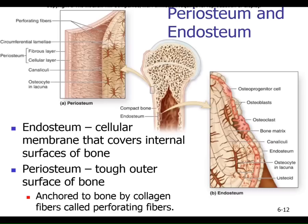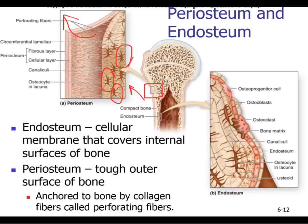Zooming in on the humerus, we see the outer periosteum being peeled back. Inside the compact bone it looks like ants — the body of the bug is the osteocyte in a space called a lacuna, and the little legs represent the canaliculi. Bone is arranged in layers, each called a lamella. At the border of compact and spongy bone, there are actually four kinds of cells.